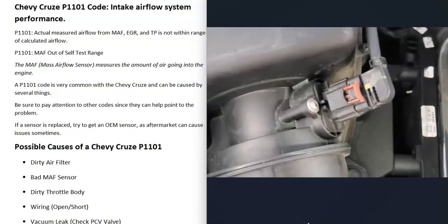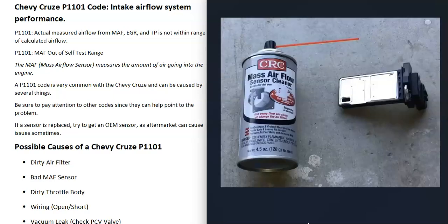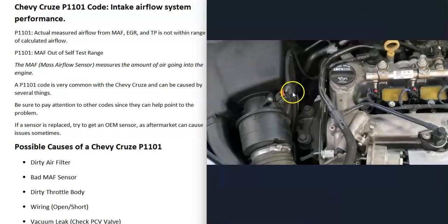The next possible cause is a bad MAF sensor — it might have just gone bad and need replacing. It's very common for these to get dirty and just need to be cleaned. There's cleaner you can buy at automotive stores; you clean it up, put it back in, and see if the code clears. If you have an OBD2 scan tool, you can also test it to see if it's failed — I made a video on that and I'll put a link below.